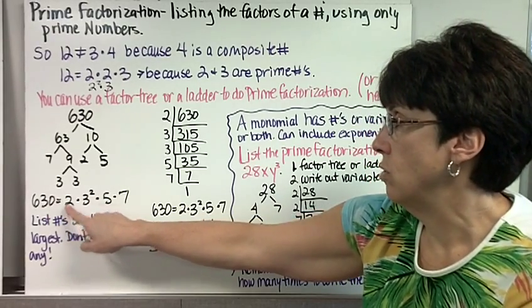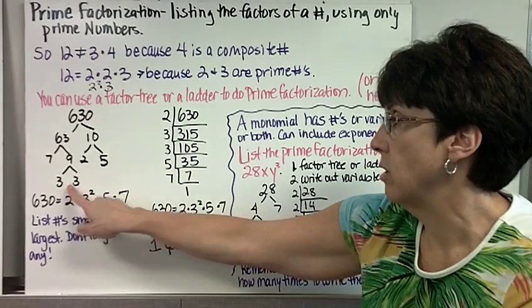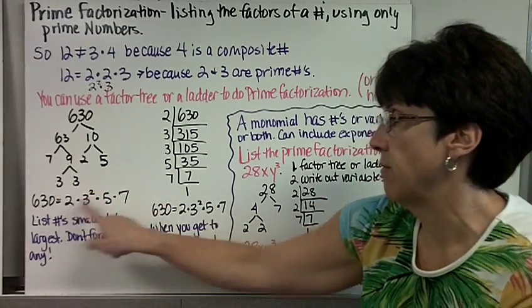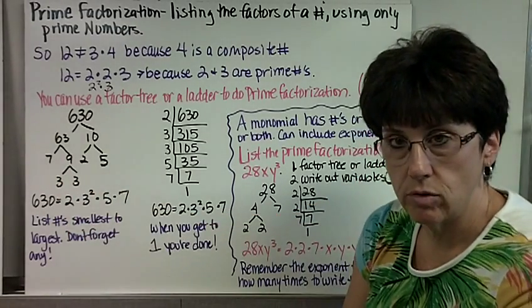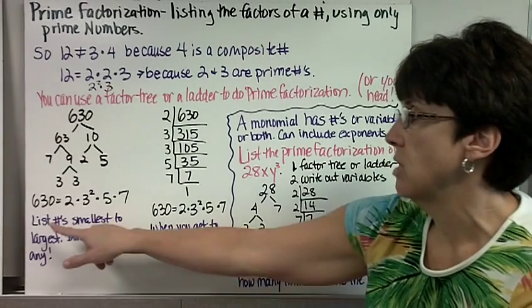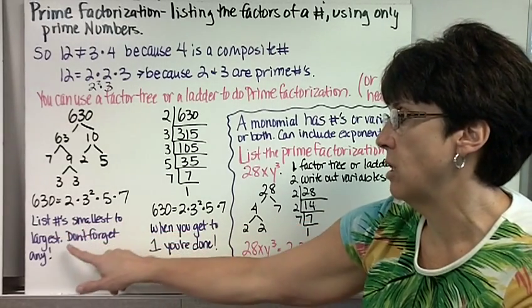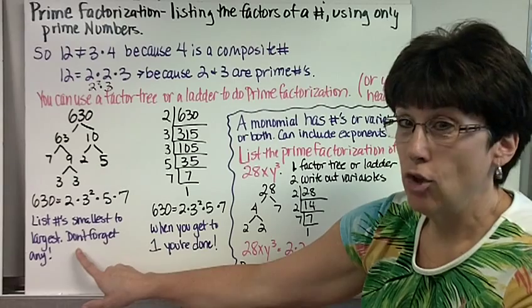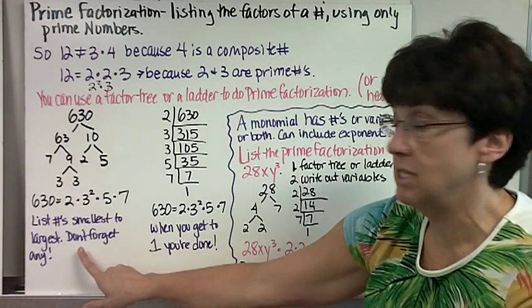So if I were listing the prime factorization of 630, it's 2 times 3 squared times 5 times 7. We only use the numbers that are at the end of the tree, the end of the branches. And we need to list our numbers smallest to largest. The only problem with a tree is sometimes it's easy to forget some.